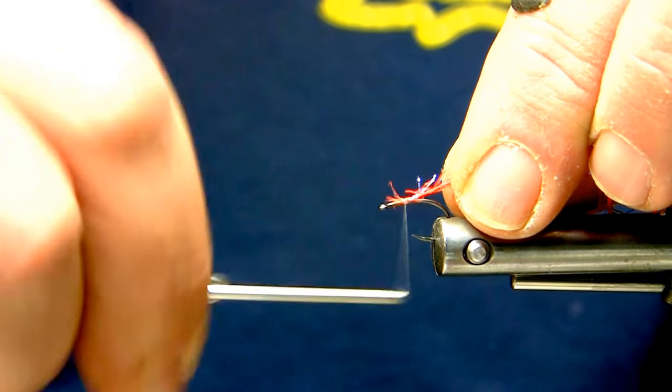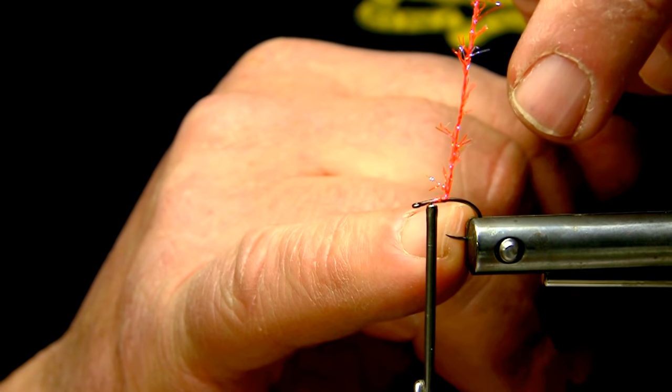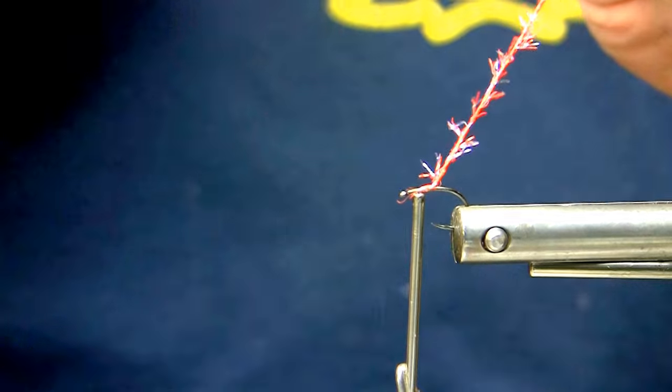But I'll just tie the micro straggle in just in front of the hook point or at the hook point as you can see here.